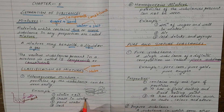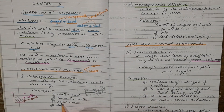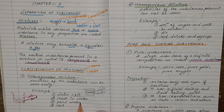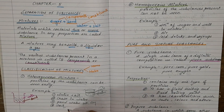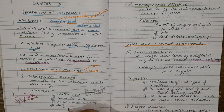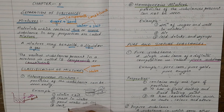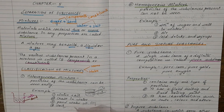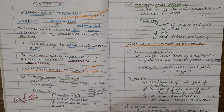Other examples of heterogeneous mixture include chalk in water, pond water, and soil. Soil is a mixture of dead and decaying plant and animal matter, mineral salts, sand, and clay. It is also a heterogeneous mixture because we can identify all the constituents of soil.